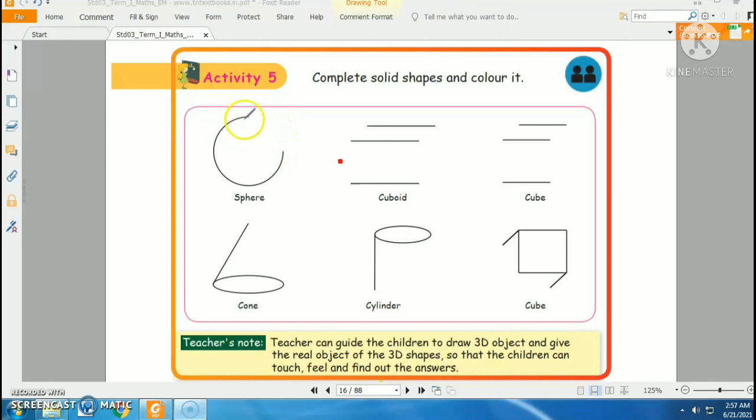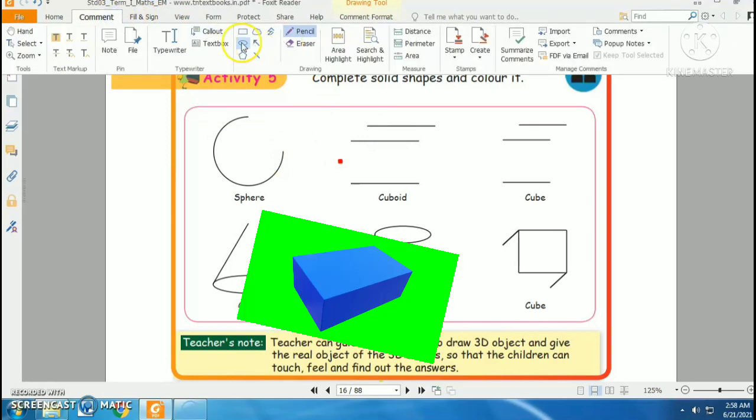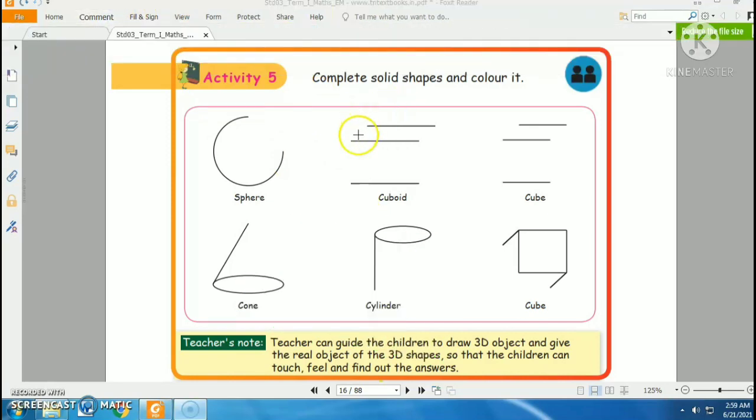The next shape is a cuboid. There are three lines, you can guess that it is a cuboid. Try to complete the cuboid. The next one is a cube. You can complete that cube also.